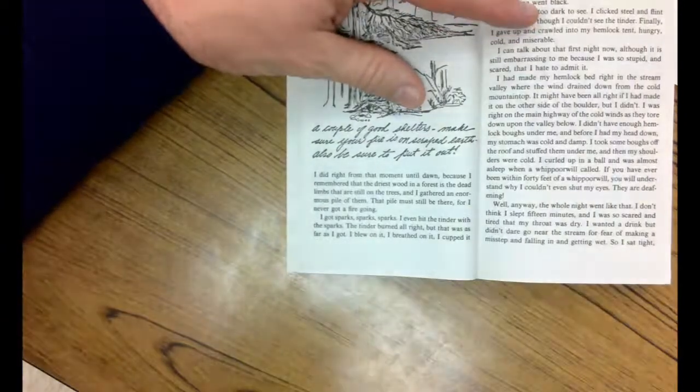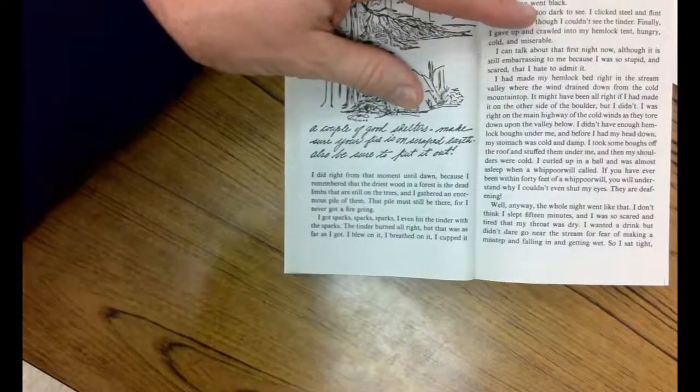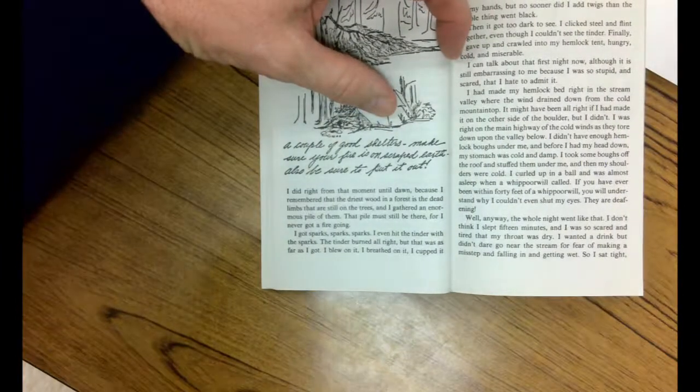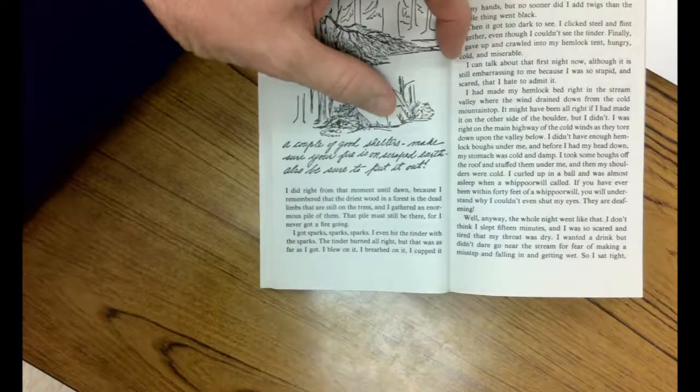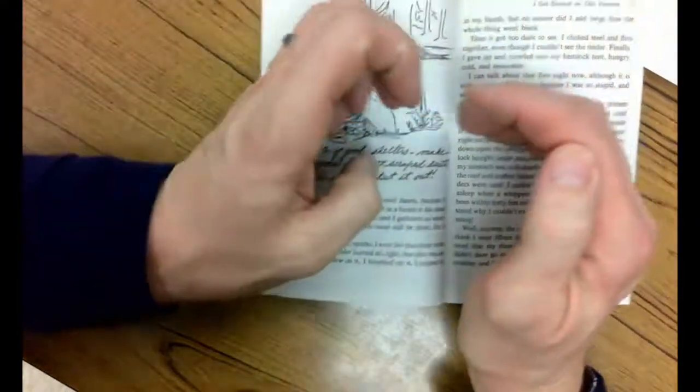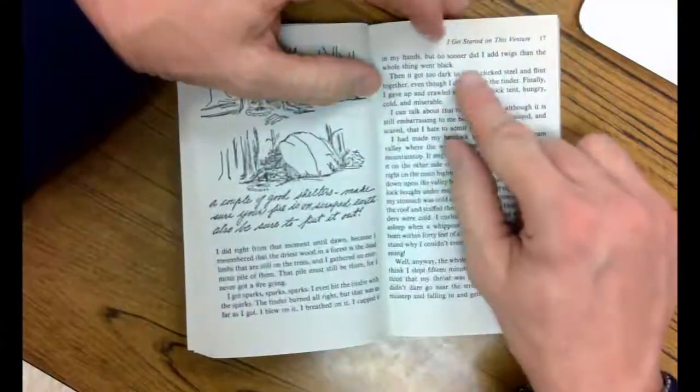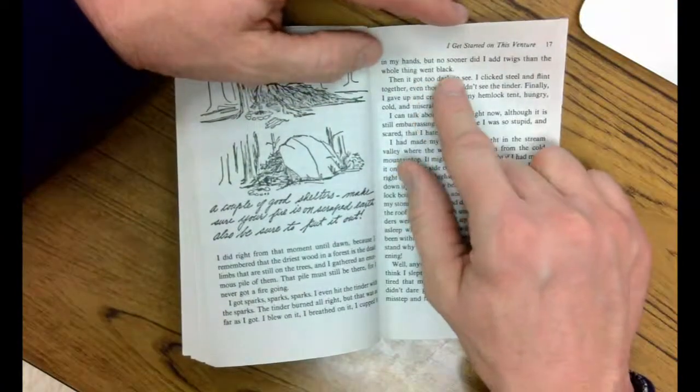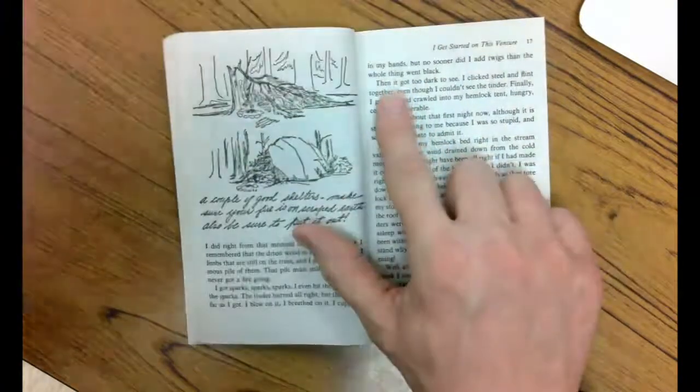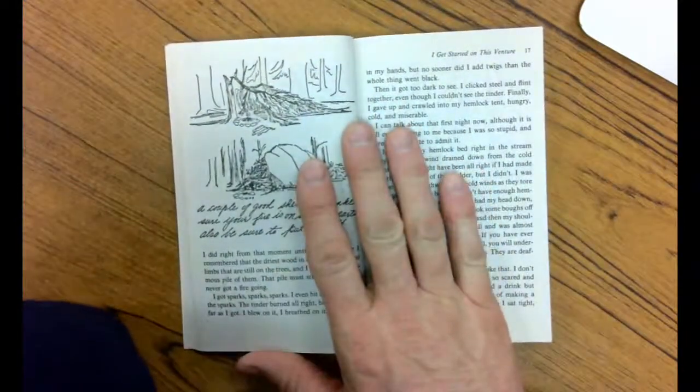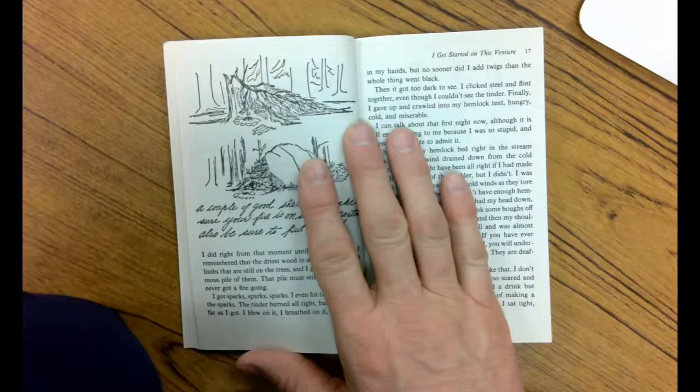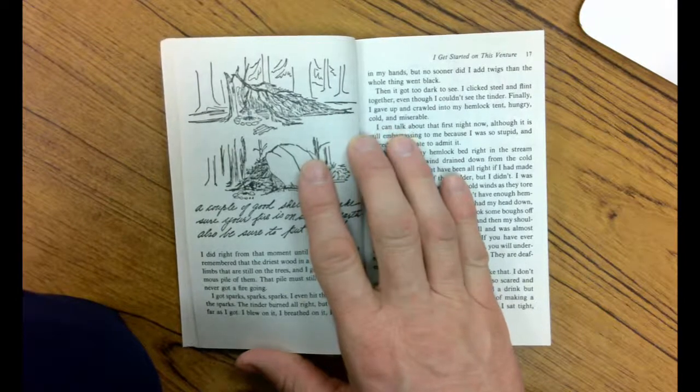So he gathered all this wood, but he never got it to burn. I got sparks, sparks, sparks. I even hit the tinder with the sparks. The tinder burned all right, but that was as far as I got. I blew on it. I breathed on it, and I cupped it with my hands. But no sooner had I added twig than the whole thing went black. Then it got too dark to see. I clicked steel and flint together even though I couldn't see the tinder. Finally I gave up and crawled into my hemlock tent.